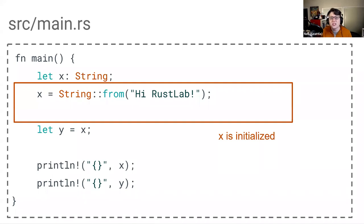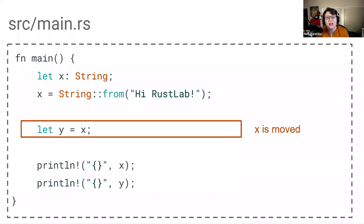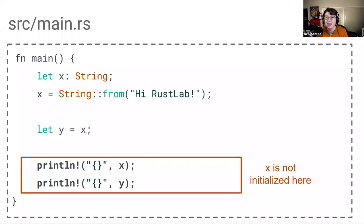Starting with the line where we assign the value of x as this string: at this point, x is live — its lifetime begins here. When we get to the line where we move the value of x into y, that is the end of x's lifetime. And then when we get down here and try to use x again, x is dead — its lifetime is over at this point. That's why this program will error out when we try to compile it. It's very nice to catch this at compile time and not at runtime.